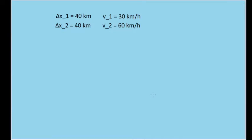In this problem, an automobile is traveling on a straight road for 40 kilometers at 30 kilometers per hour, and then it speeds up to 60 kilometers per hour and travels at that speed for 40 more kilometers. Part A asks us to calculate the average velocity of the car during the full 80-kilometer trip.